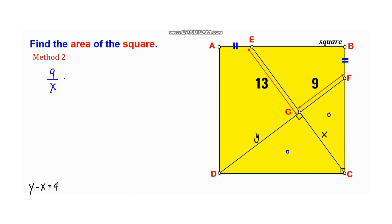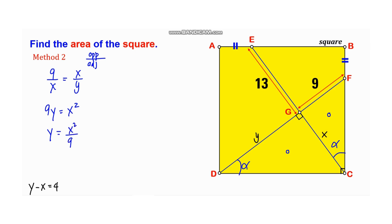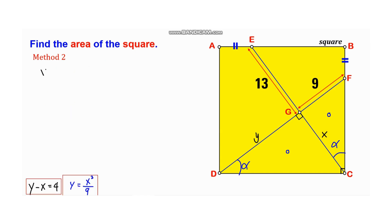Also from Method 1, triangle FCG is similar to triangle GCD. Using the ratio opposite over adjacent with respect to angle alpha: 9 over X equals X over Y. Cross-multiplying gives 9Y equals X squared, so Y equals X squared over 9.